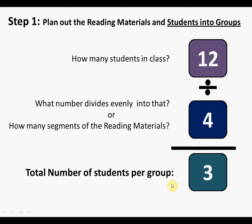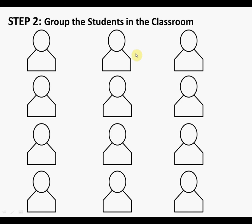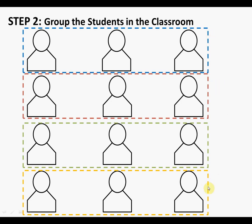Step 2: group the students in the classroom. With 12 students sitting in four rows of three, you can simply say everyone in row 1 is group 1, row 2 is group 2, row 3 is group 3, and row 4 is group 4. Then ask them to move and sit together with their group.